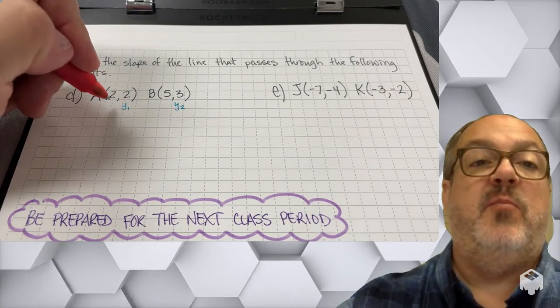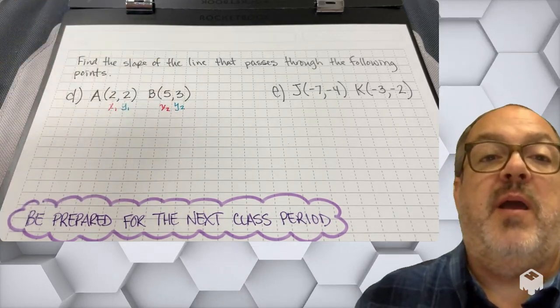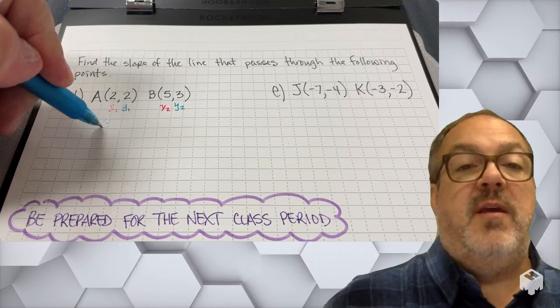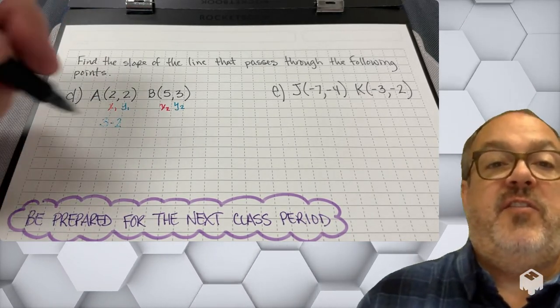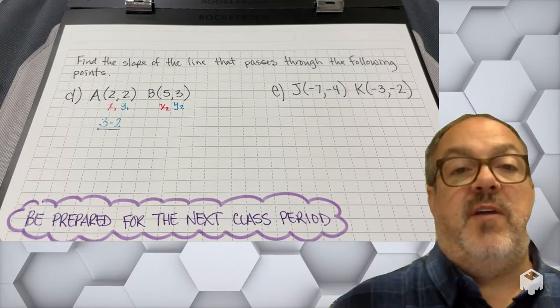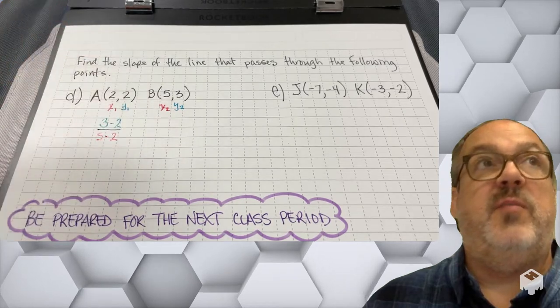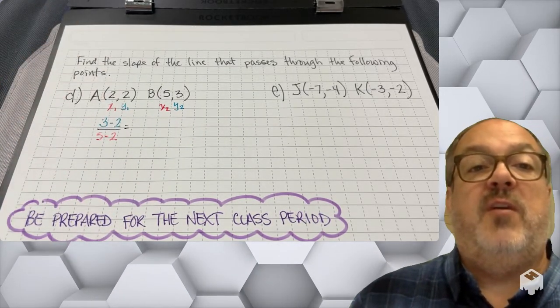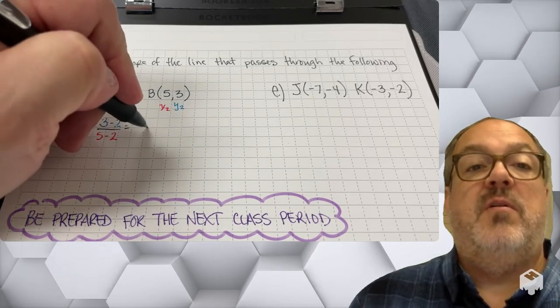All right, so in problem D, I'm labeling my x1 and my x2 and my y1 and my y2. And so I'm going to get 3 minus 2 as the change in my y value, over 5 minus 2, which is going to be the change in my x value. And that's going to give me a slope of 1 over 3.